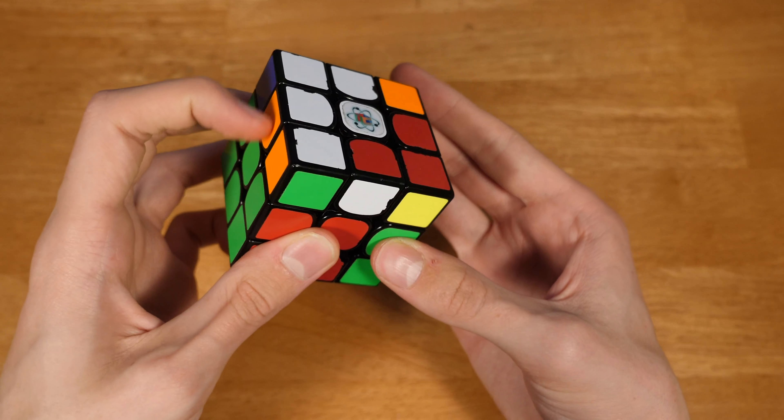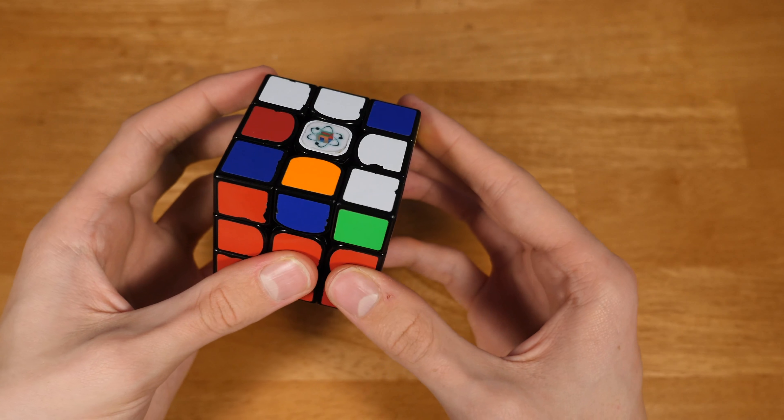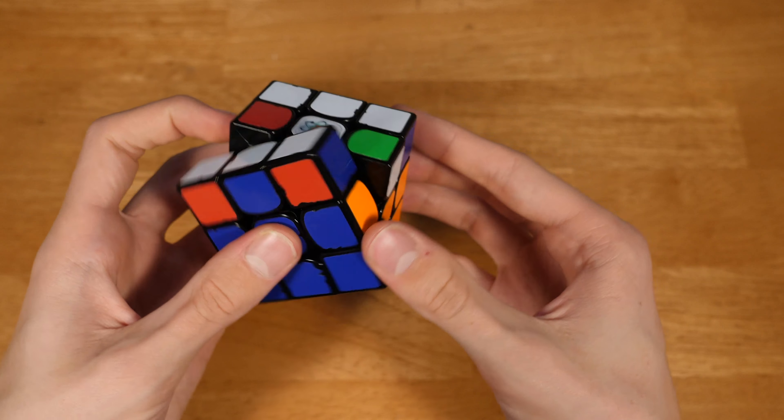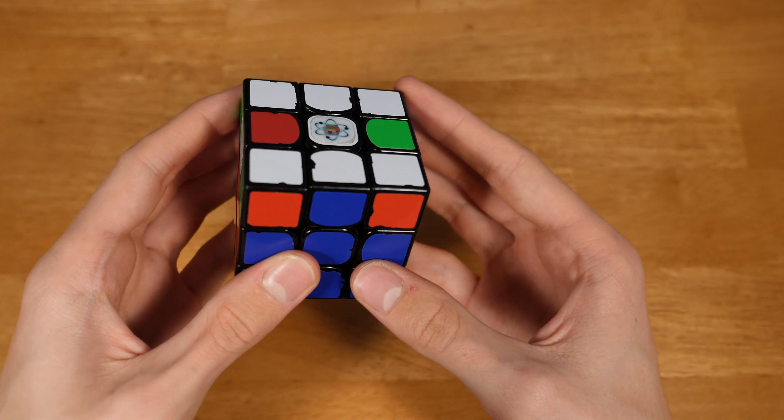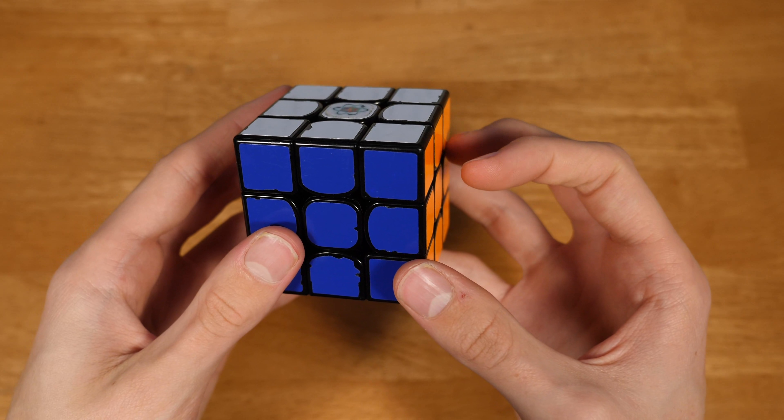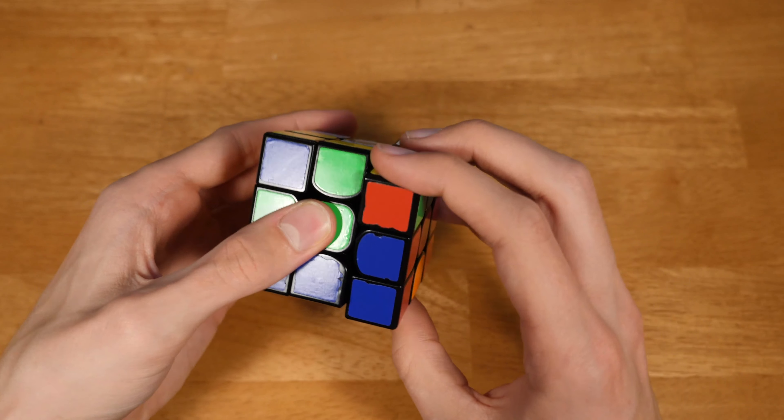Rotate, and then it's fast to the last layer skip. So instead of doing something like this, you rotate, and then finish off the solve with just a standard OLL and PLL skip.